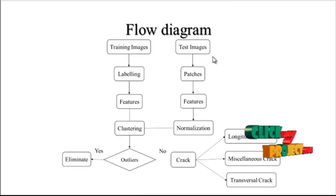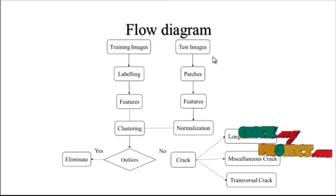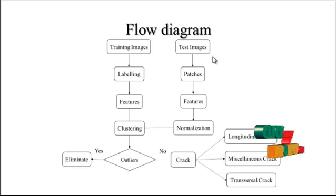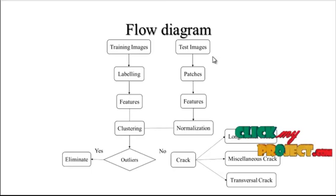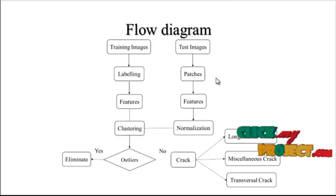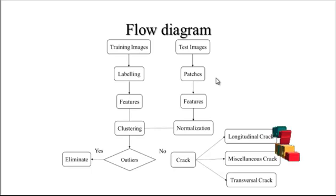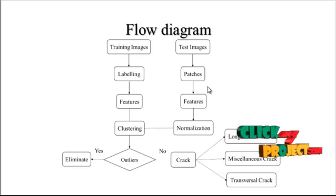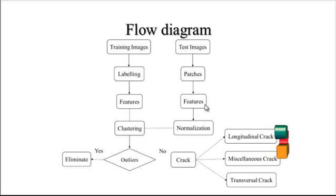After getting the testing input, we move on to preprocessing, which involves resizing the image array. After that, the preprocessed image is converted into segmentation portions. In the segmentation portion, the region of the pavement cracks is extracted — whether the crack is in horizontal or vertical form.